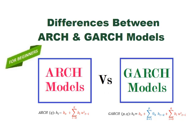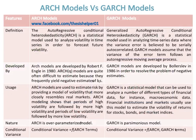Differences between ARCH and GARCH models. The Autoregressive Conditional Heteroscedasticity, ARCH, is a statistical model used to analyze volatility in time series in order to forecast future volatility. Whereas, Generalized Autoregressive Conditional Heteroscedasticity, GARCH, is a statistical model used in analyzing time series data where the variance error is believed to be serially autocorrelated.